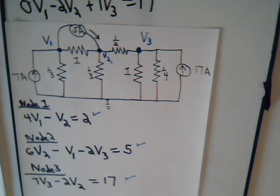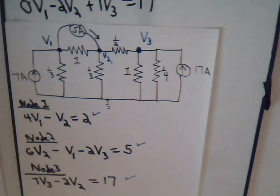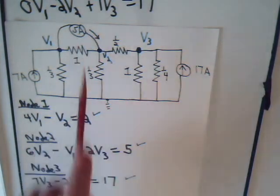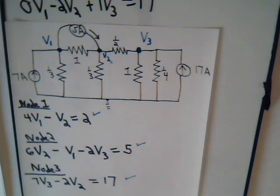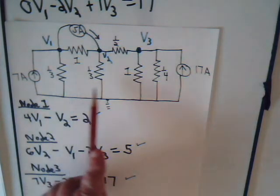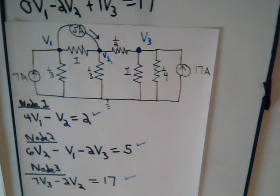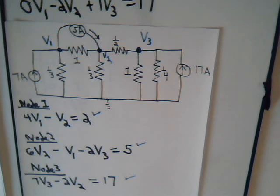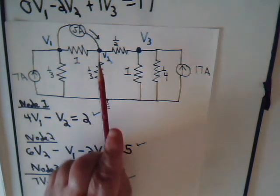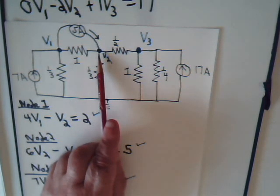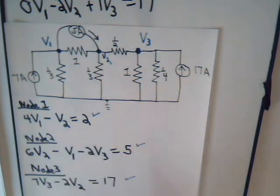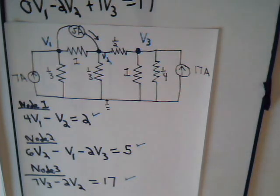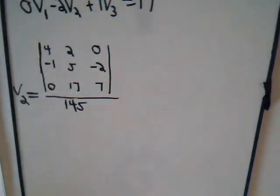In the last video we were analyzing this circuit where we have one, two, three current sources and an array of resistors here, and we had determined the value of V1, that was one volt. Now we want to determine the value of the potential, the voltage at that node V2, and the voltage at this node V3. So we're going to continue along.